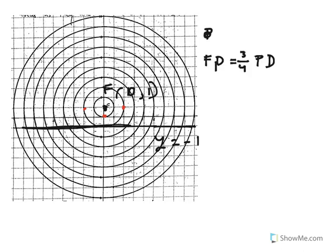So let's see how this could happen. This could happen when PD is 4 and FP is 3. So for FP to be 3, it has to be on this 1, 2, 3rd circle, but for PD to be 4, it has to be on the 1, 2, 3, 4th line.